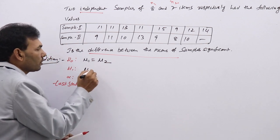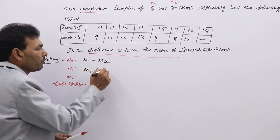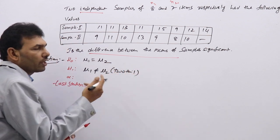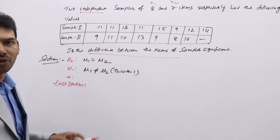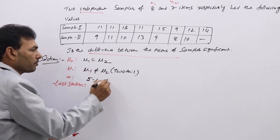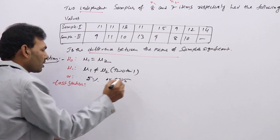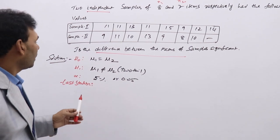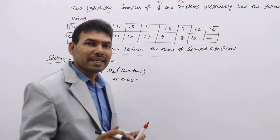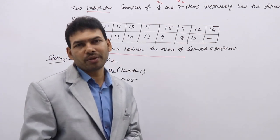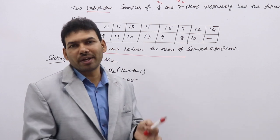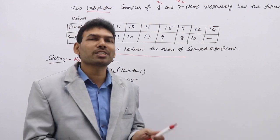For H1, we take by default mu1 not equal to mu2, whenever no information is given regarding H1. Alpha is default 5%. Coming to the test statistic, the formula is X-bar minus Y-bar divided by S times the square root of (1/N1 + 1/N2).